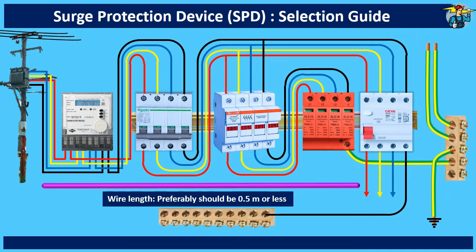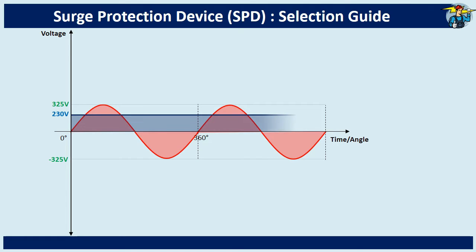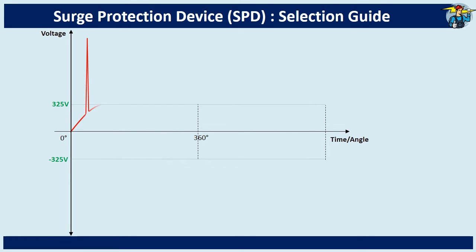To get a clear idea about selecting an SPD, let's first look at how transient voltage spikes appear in the voltage sine wave. This is a 230 volt, 50 hertz frequency AC supply, where the actual voltage alternates between a maximum of 325 volts and a minimum of minus 325 volts respectively. As this alternation works very fast, with a speed of 50 cycles per second, we take this voltage as the maximum continuous voltage of 230 volts — that is the RMS or root mean square value. Here shows how the sudden voltage spikes appear in the voltage sine wave. These will reach a high peak value, but disappear quickly.